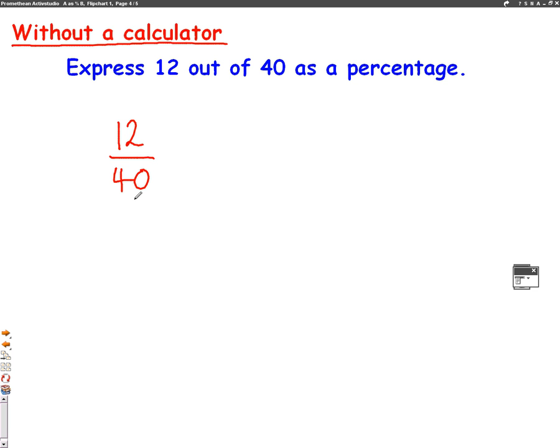So let's see if we can change it, make the numbers smaller. Now, if I divide the top number of the fraction by 4 and the bottom number of the fraction by 4, this will help me a lot. 12 divided by 4 will give me 3 on the top. 40 divided by 4 will give me 10 on the bottom. So 12 out of 40, I've now rewritten it as 3 out of 10.